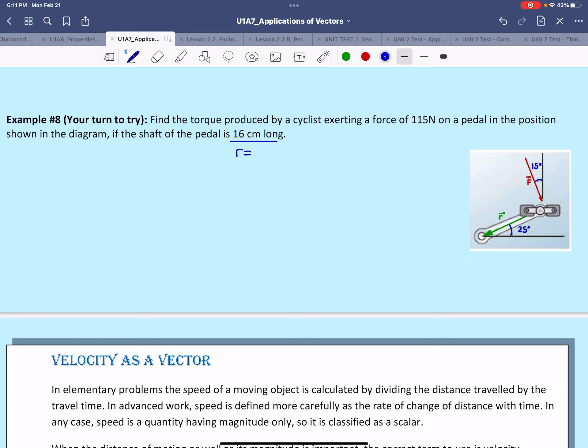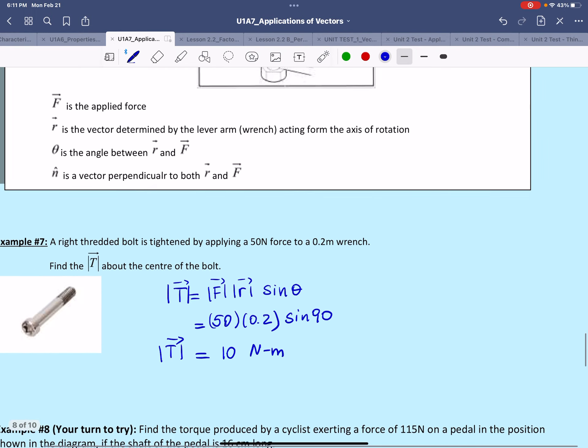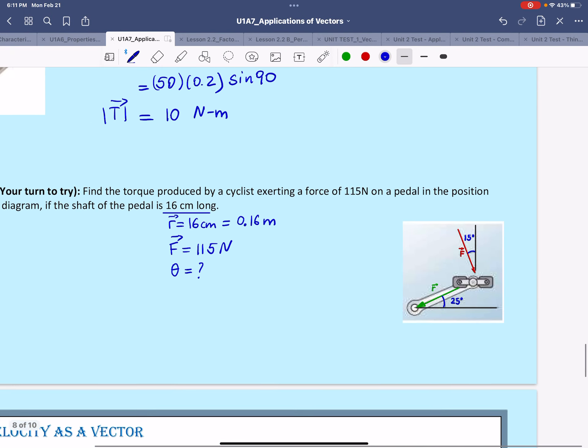That will make R equal to 16 centimeters. It is very important we convert this to meters, so that would be 0.16 meters. Now the force given in this case is 115 newtons. It is very important now to find the angle theta made between the force and the length of the arm.